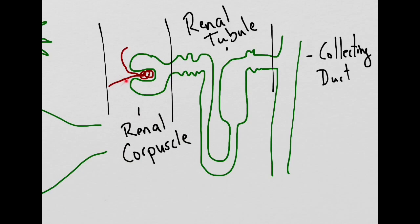The afferent arteriole will turn into the glomerulus, which involves 50 intertwined fenestrated capillaries. And then the blood that is not filtered will exit the renal corpuscle through the efferent arteriole.